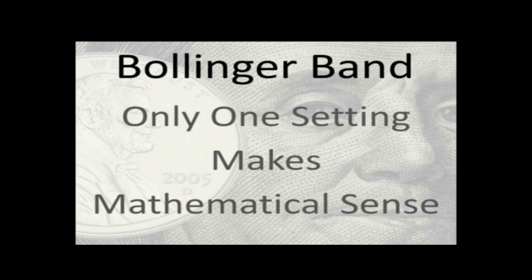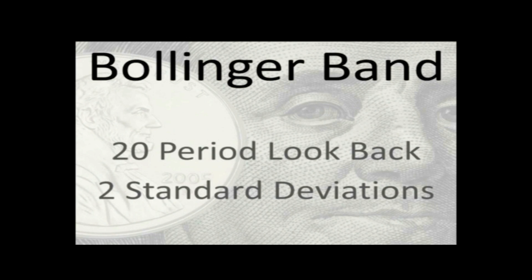The nice thing about a Bollinger Band is there's really only one setting that makes mathematical sense. With a simple moving average, some people use 10-period, some use 50, 100, or 200 — there's an infinite number of settings, and that's part of what causes the problem. A Bollinger Band really should only have one setting: a 20-period look-back with two standard deviations, set on the close. If you have high-end software that allows an offset, don't use it — keep it simple.